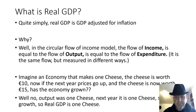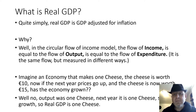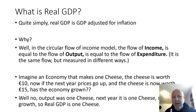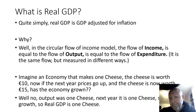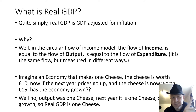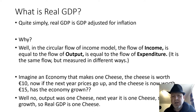In the circular flow of income model, the flow of income is equal to the flow of output, which is equal to the flow of expenditure — it's the same flow measured in different ways. Imagine an economy that makes one cheese worth 10 euros. If next year prices go up and the cheese is worth 15 euros, has the economy grown? No — because the output was one cheese and the next year the output is still one cheese. So there is no growth; the real GDP is one cheese.